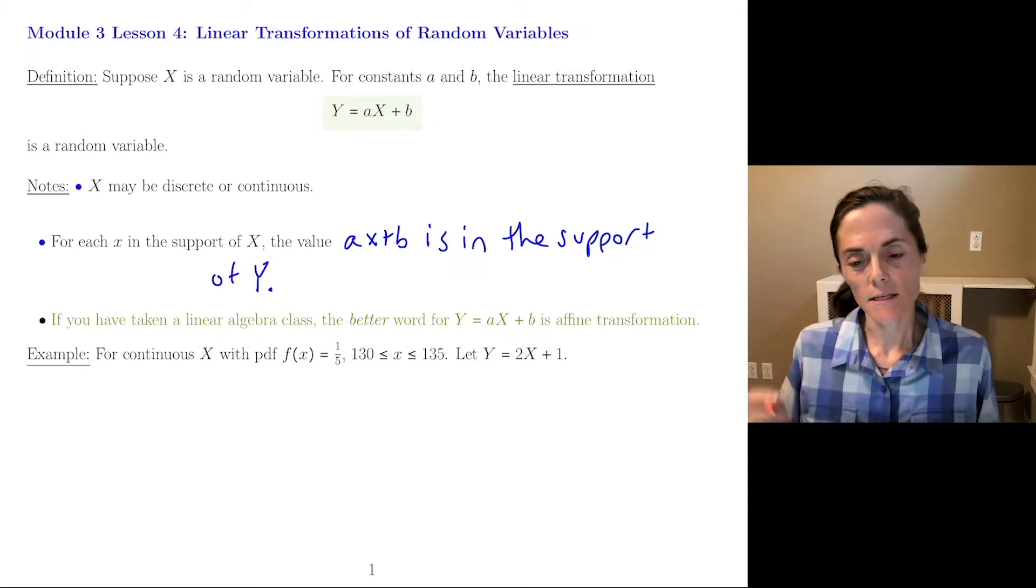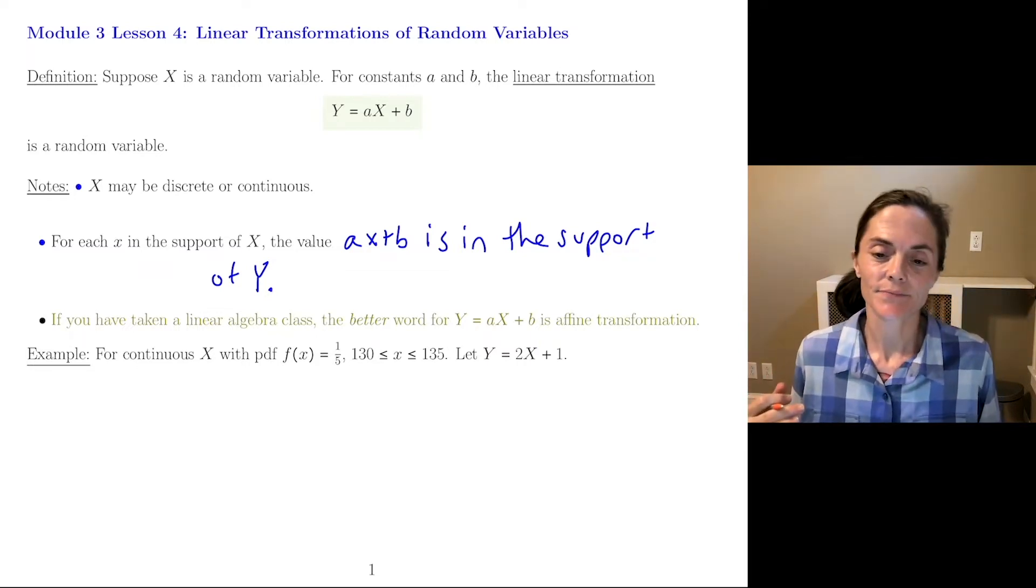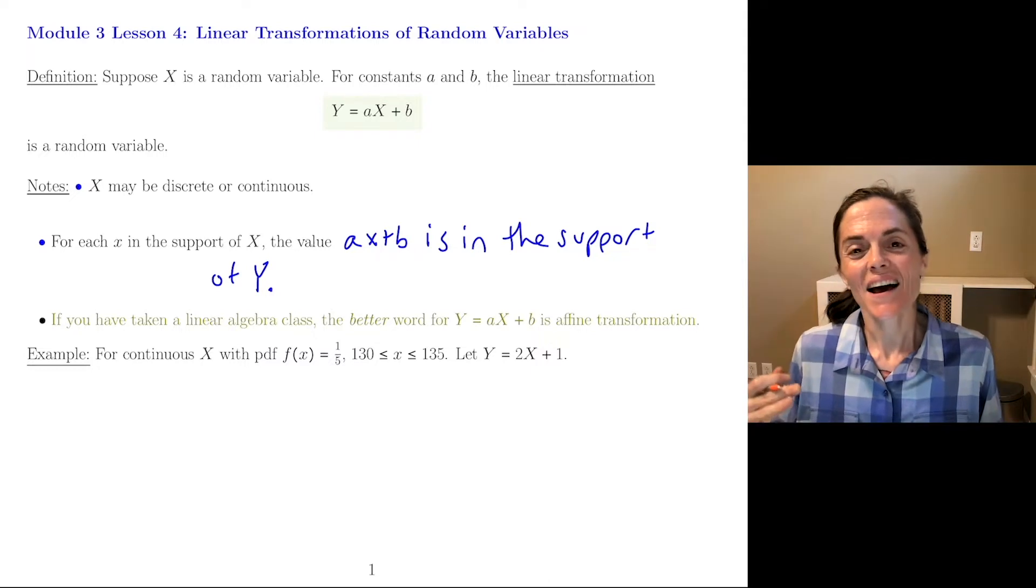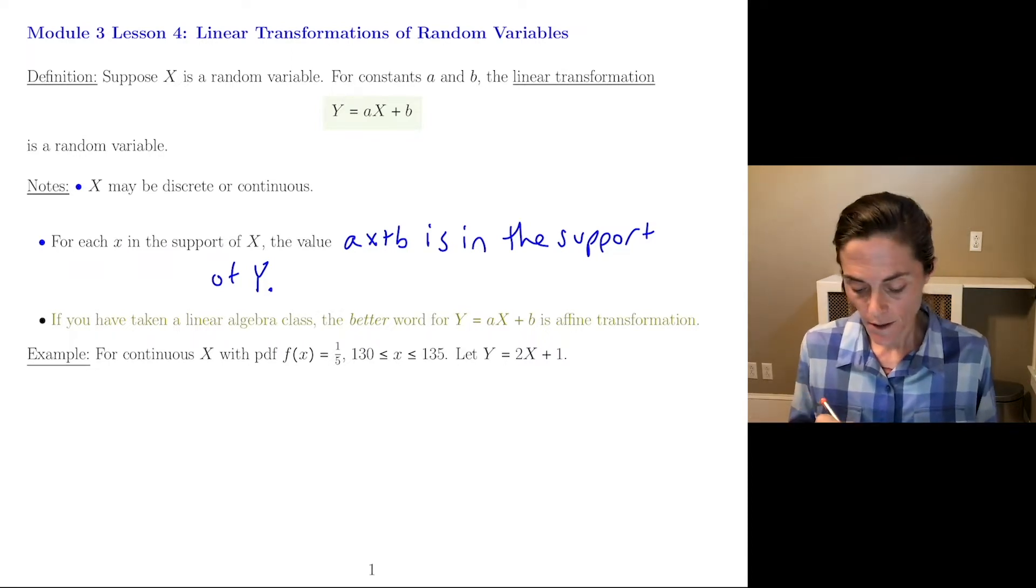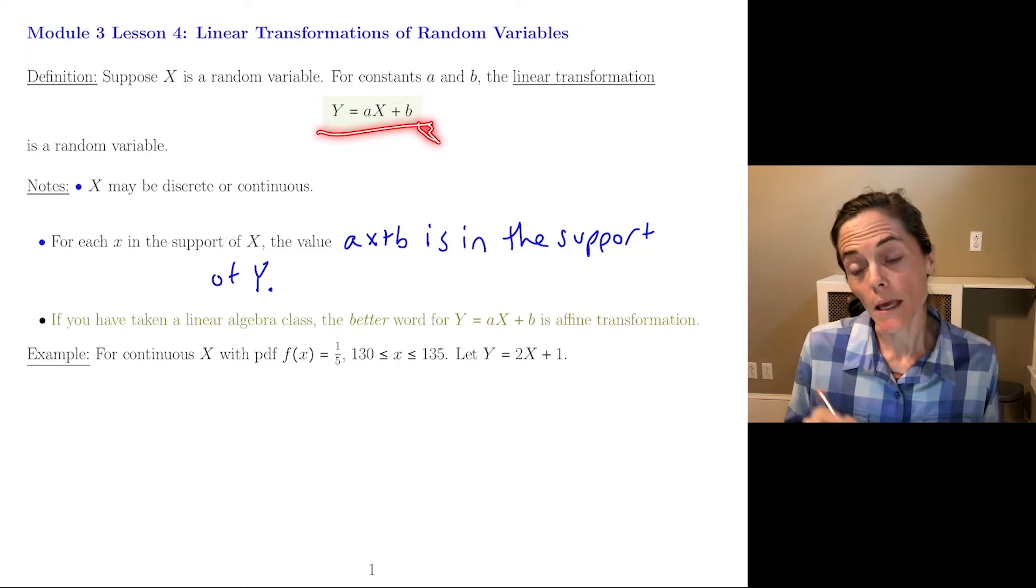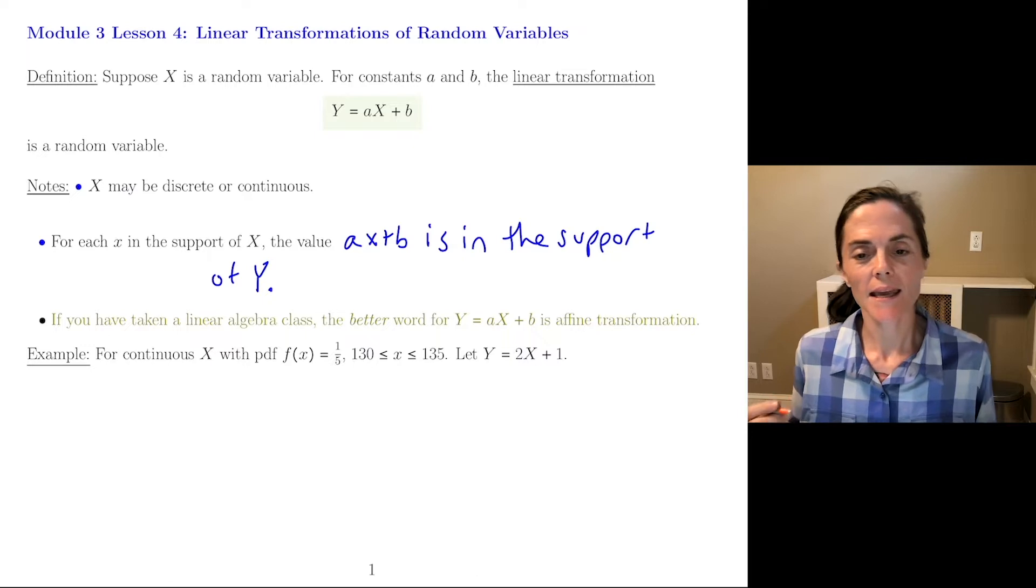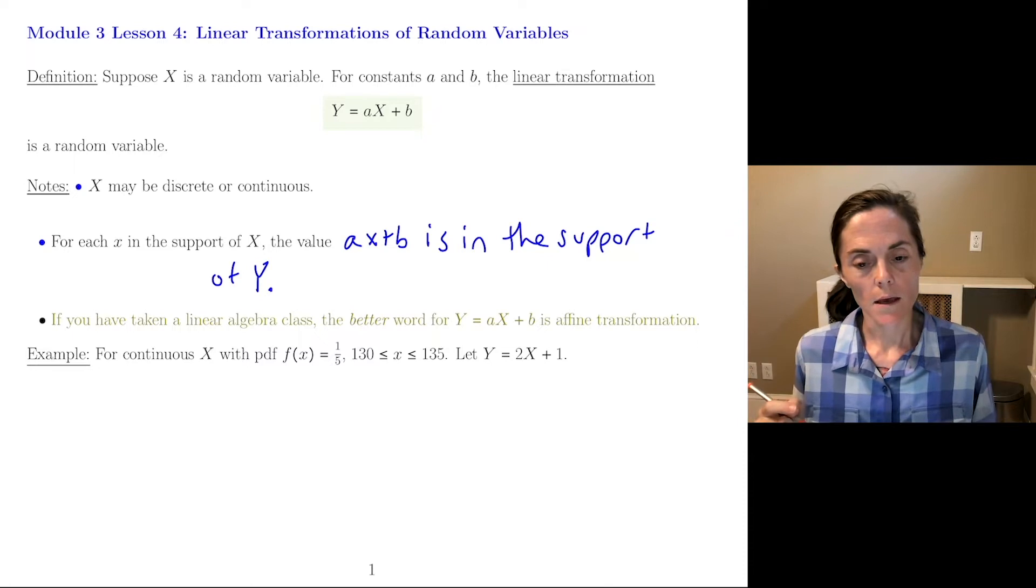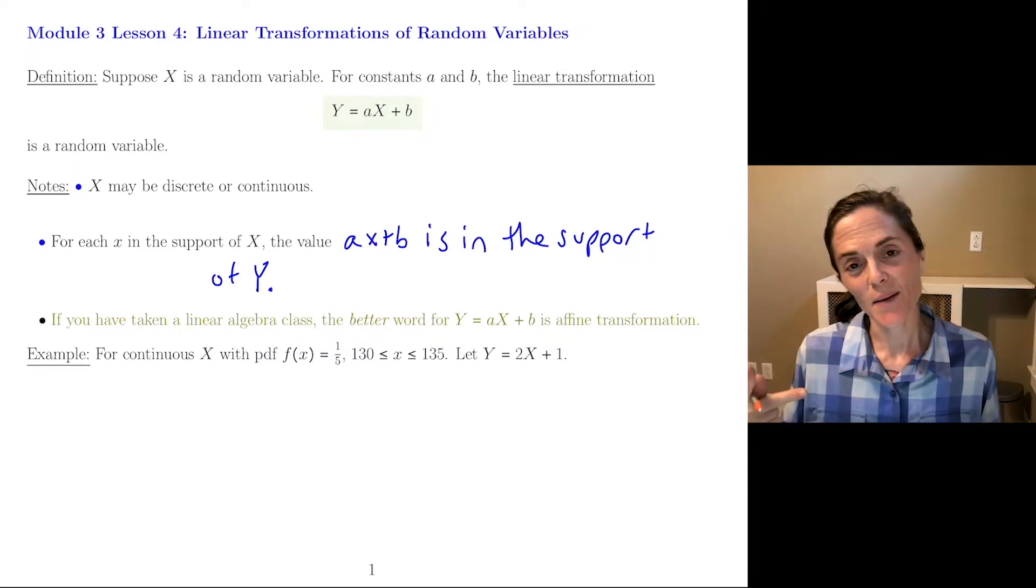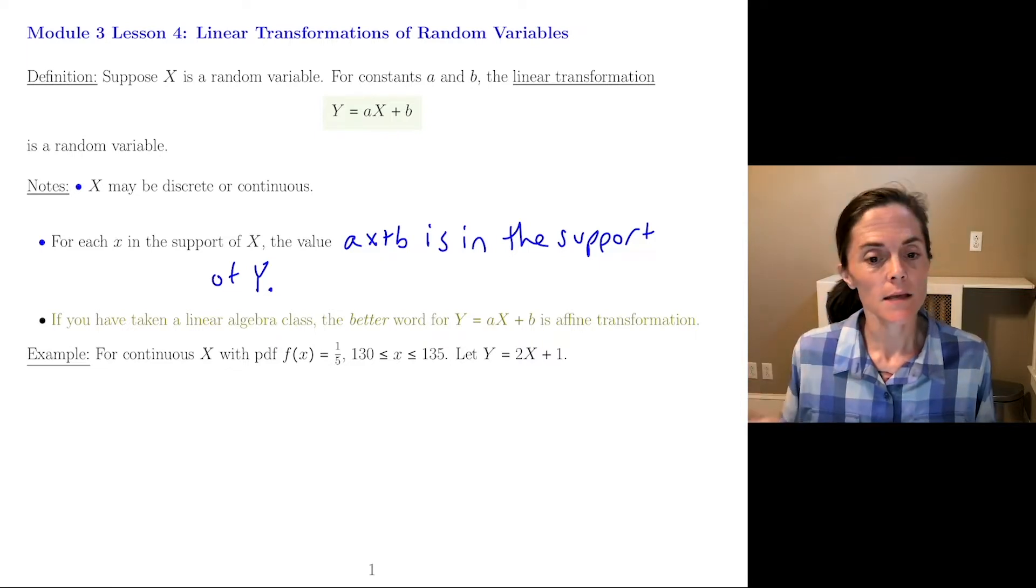Now this olive colored comment is important. If you've had a class in linear algebra, you know linear transformation means something. In particular, this would not be. A better word is affine transformation, but in any case, we will use linear transformation this semester. So let's do two examples and then I'll talk about the effect of linear transformation on mean and variance.